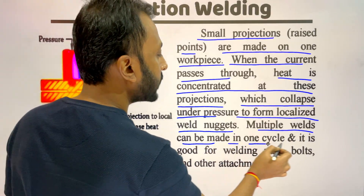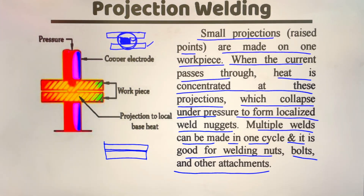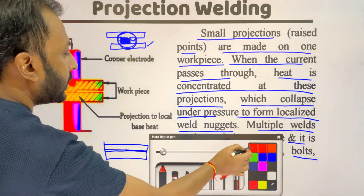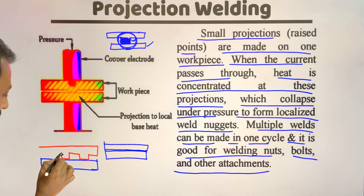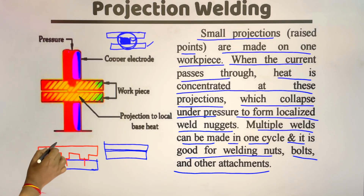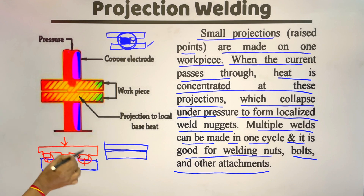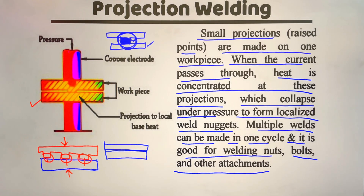Multiple welds can be made in one cycle, and this process is good for welding nuts, bolts, and other attachments. For example, if there are multiple projection areas — first, second, third — when electric current passes and pressure is applied, all those projected portions fuse simultaneously and make welding joints. This is one setup of the projection welding process with copper electrodes, where the projected portion is fused and after solidification a welding joint is obtained.